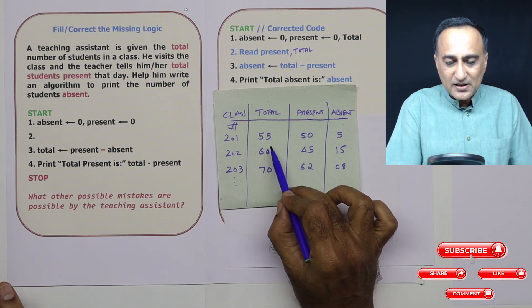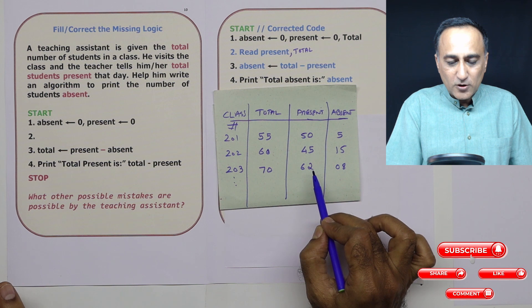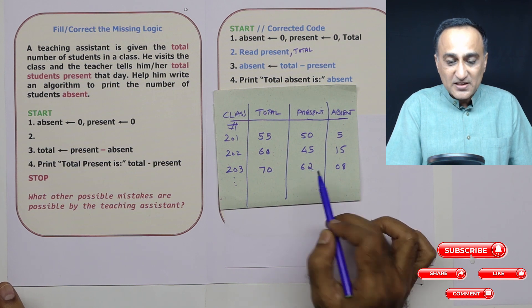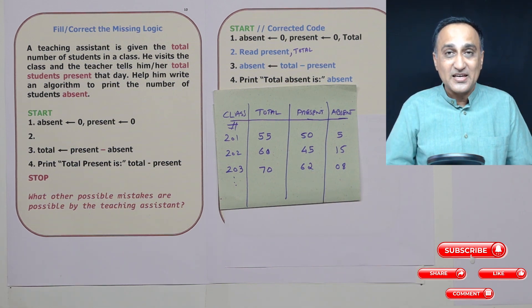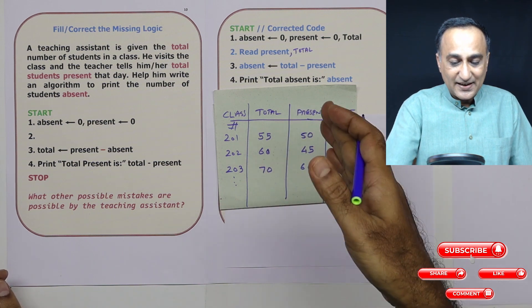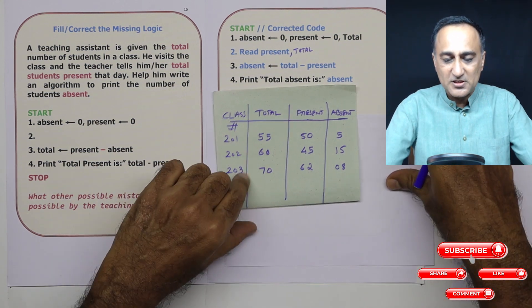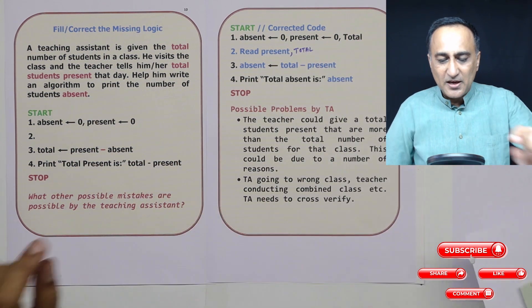So here what is going to happen is, if he goes to say 201, and he gets a count of 62 present, then he's not in the right class. So if he's not careful, he may go to the wrong class, enter the wrong present and calculate the wrong absent. So those are some of the possible mistakes the teaching assistant may make.